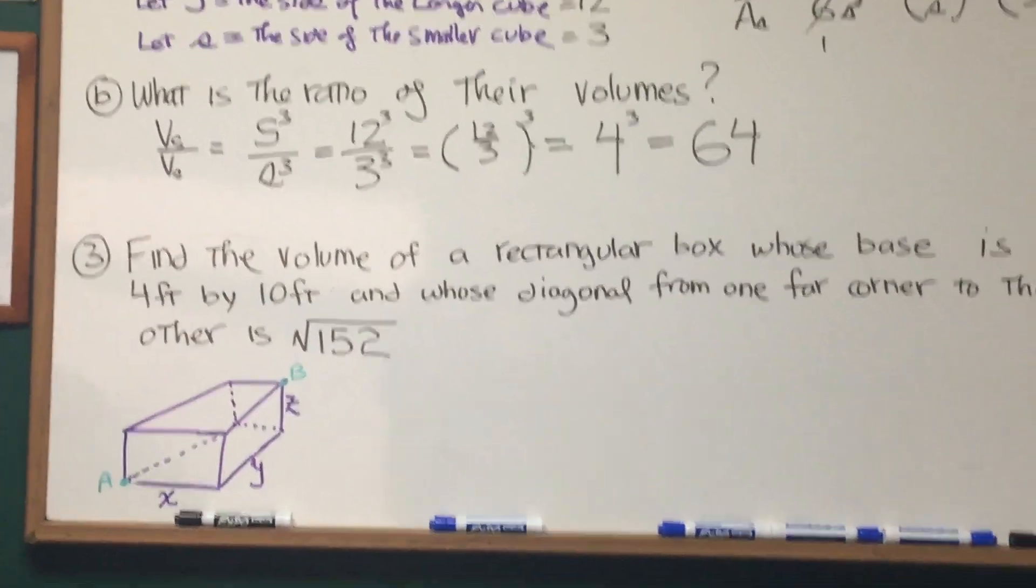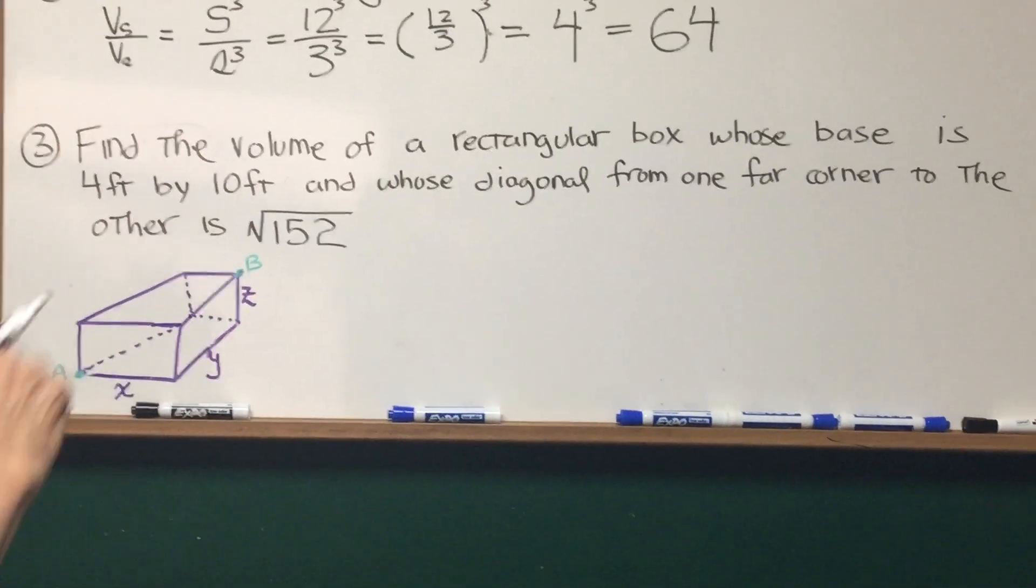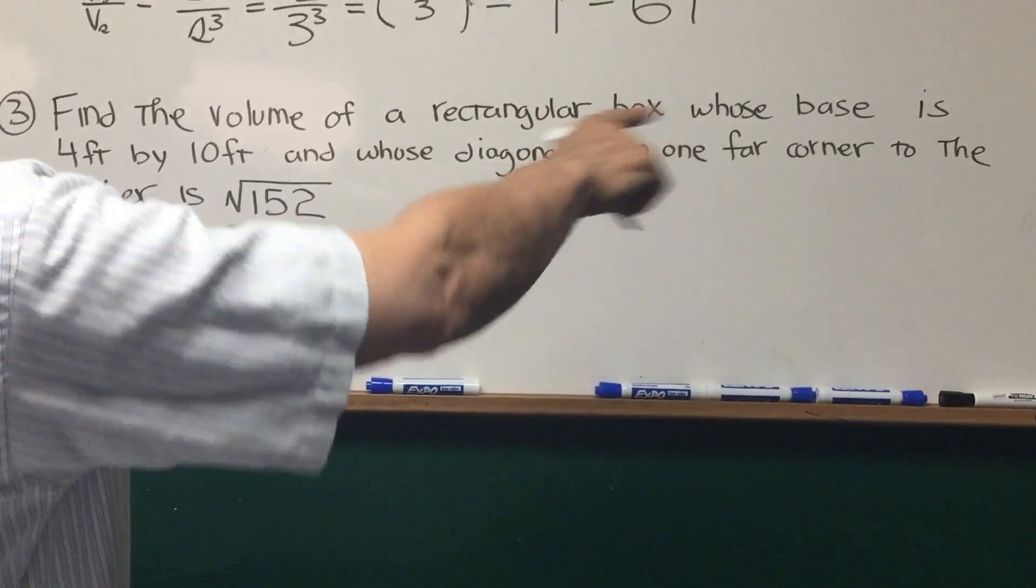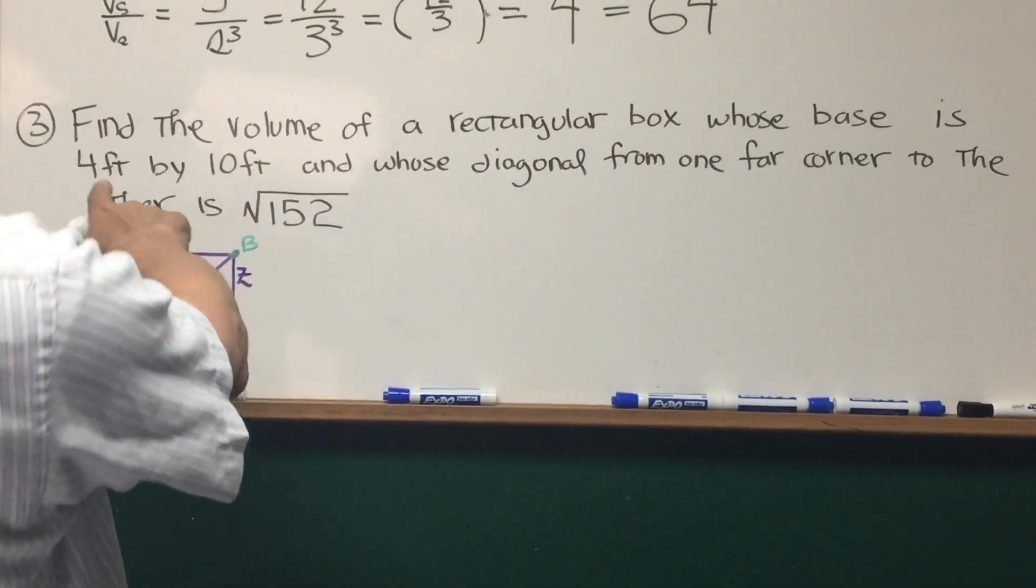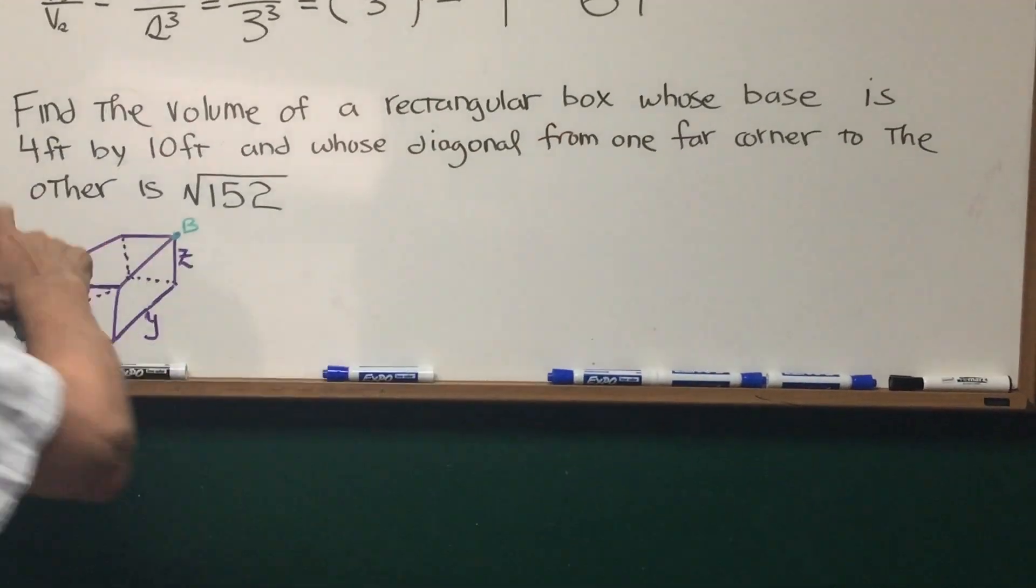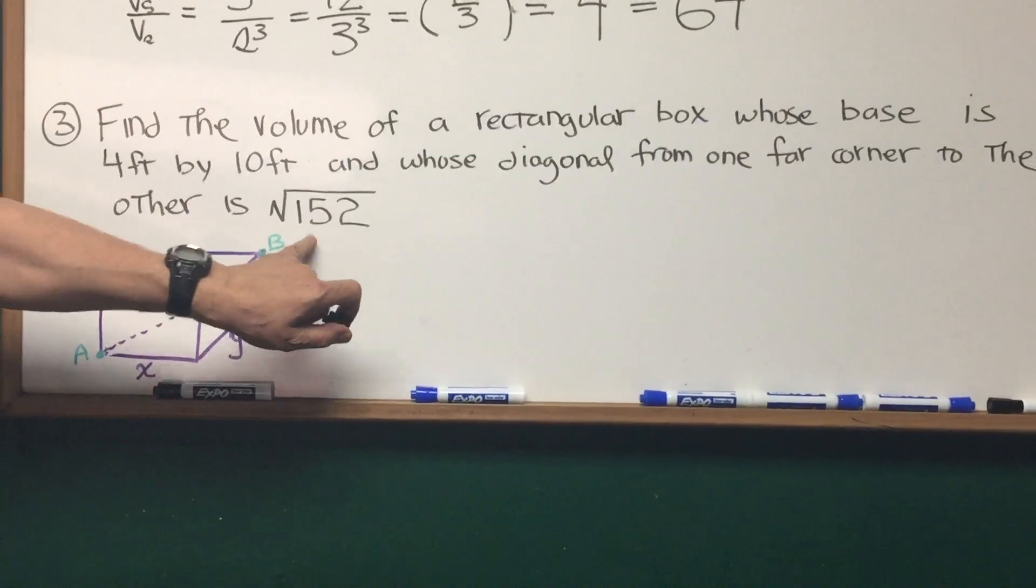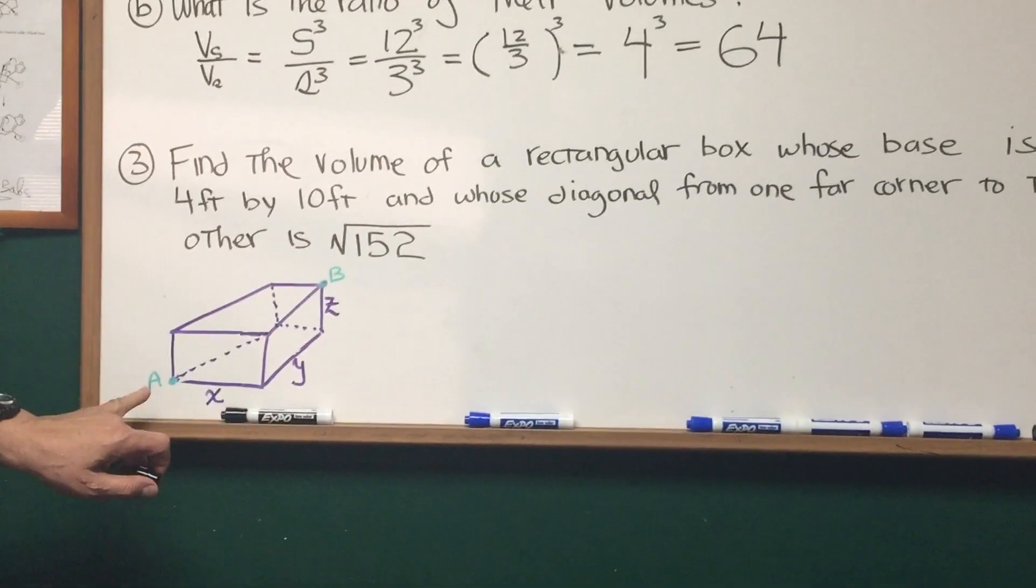All right, third. This is not quite a cube, but a parallelepiped. Find the volume of a rectangular box whose base is 4 feet by 10 feet and whose diagonal from one far corner to the other is the square root of 152. Now, this is the key to the problem, the square root of 152.